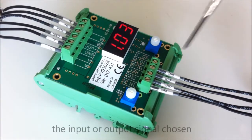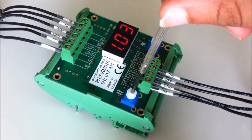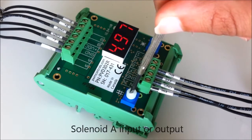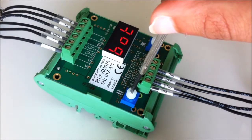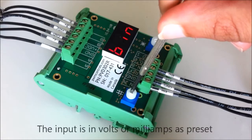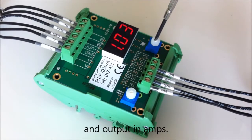A power-up of the display shows the input or output signal chosen by rotating the pound selector: solenoid A input or output, solenoid B input or output. The input is in volts or milliamps as preset, and output in amps.